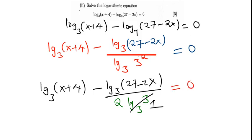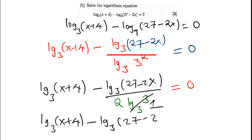So what we have at this point: log base three of (x plus four), minus log base three of (27 minus 2x), all divided by two, equal to zero. And the next step is going to be very simple.